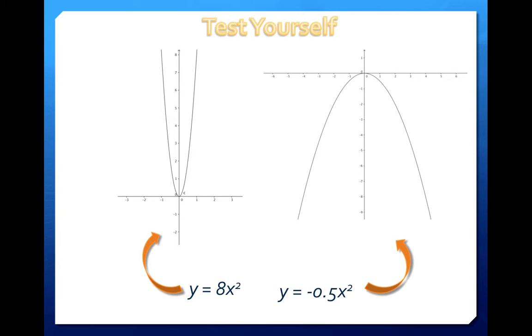The first graph is above the x-axis, which tells us that a is positive, but it's also very, very smushed, which tells us that our a is probably pretty big. So we can say that it's 8x squared. Whereas in the other graph, it is reflected below the x-axis, which tells us that a must be negative, and the opening is also really big. The closer to zero, the bigger the opening. So it makes sense that y equals negative 0.5x squared goes with the second graph.